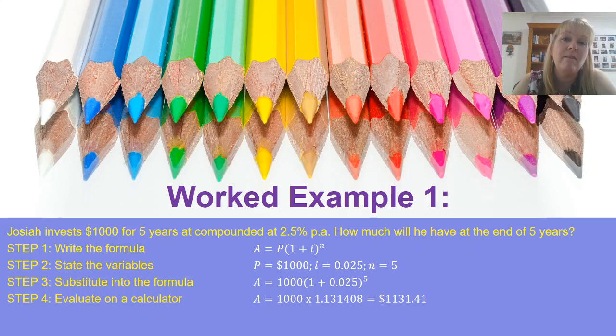Now my next step is to evaluate what I can on a calculator, but it's very important that I don't just chuck it all on the calculator and press the equals button and write that down. I do need to show some steps of working for my teacher. So the first step of working I've done is to add 1 to 0.025 and raise that to the power of 5. And then I'm going to multiply that by 1,000 in the last step. I've also given my answer in dollars and cents.